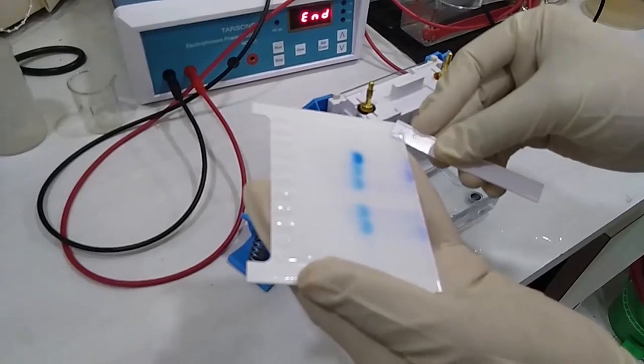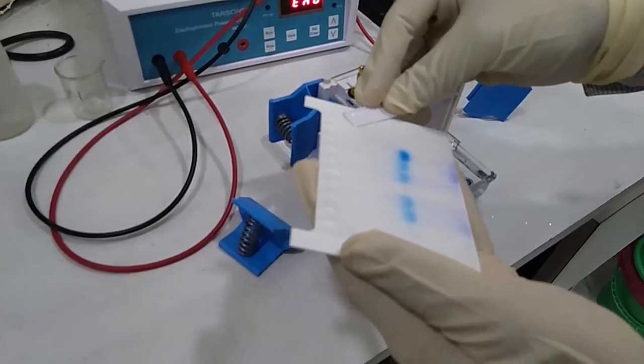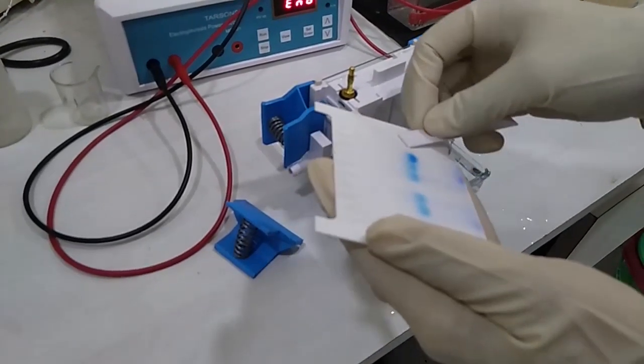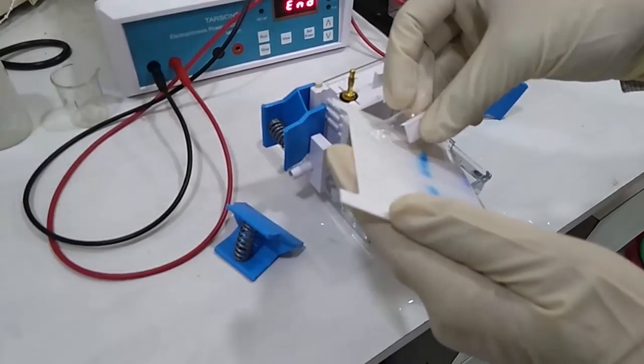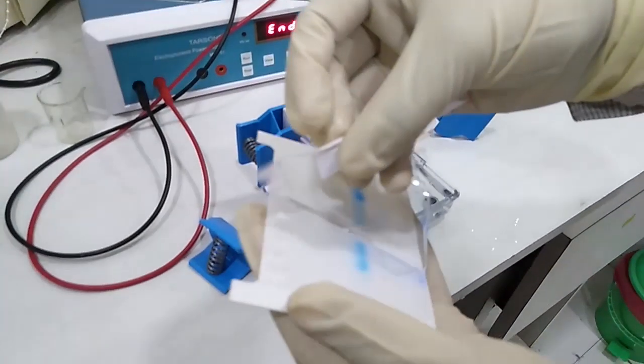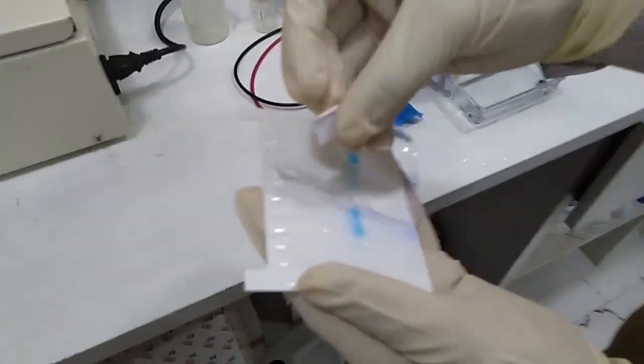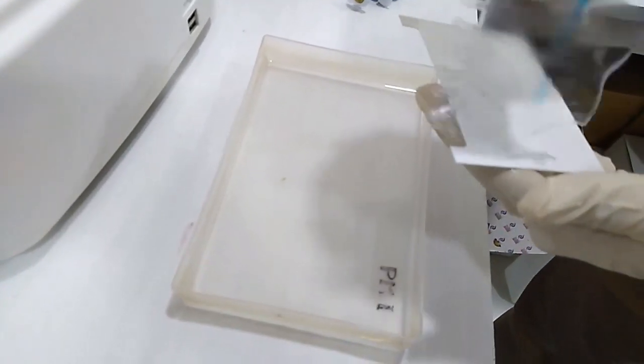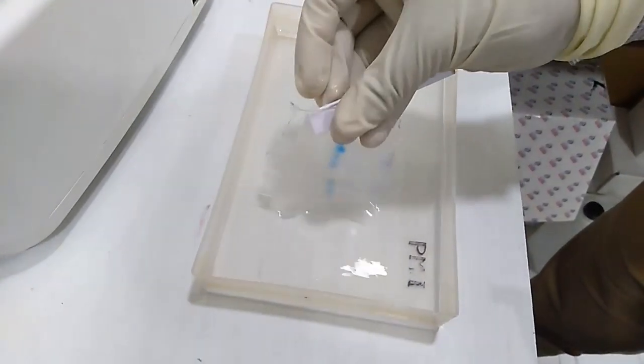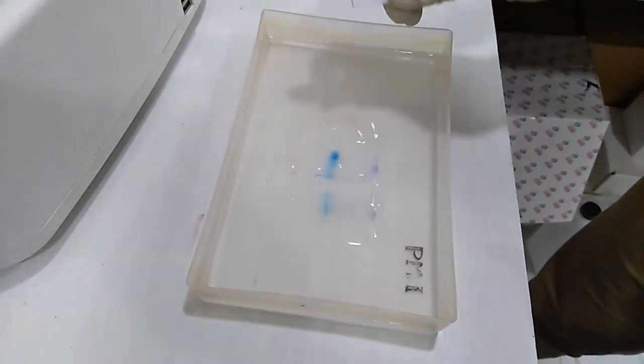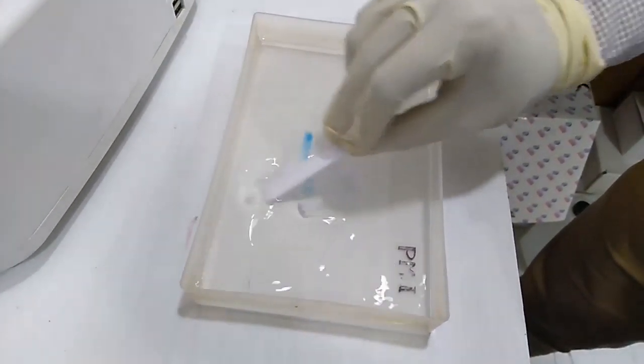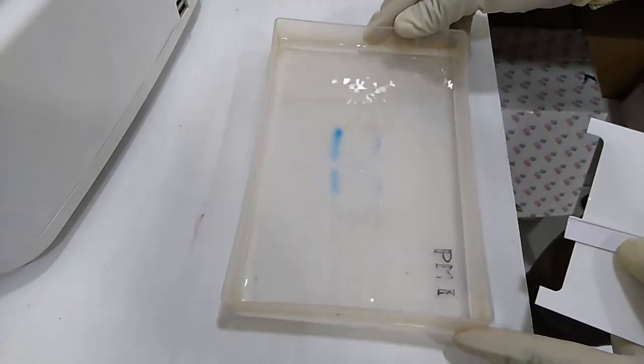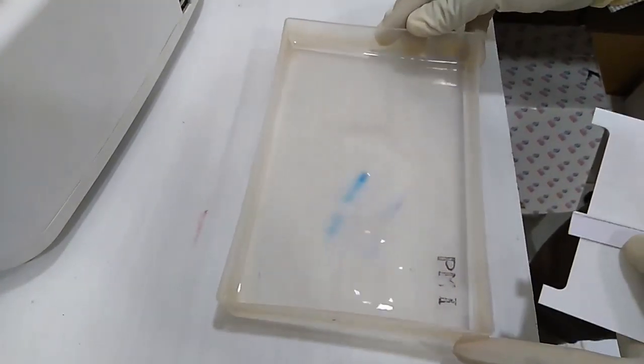We need to detach it from the slide by the spreader. Now we have to take it smoothly that there will be no damage. And we need to give it into the ethidium bromide solution we prepared. And make sure that it all be stained well.